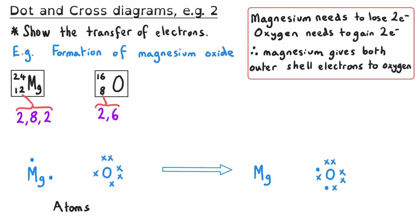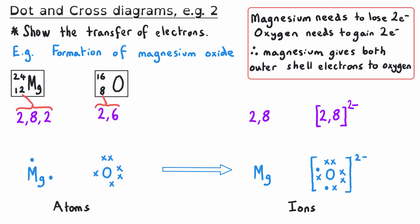After the transfer, magnesium's outer shell is emptied and oxygen has become the oxide ion, completely filled with those six crosses and two dots. Because oxygen gained two electrons it now has a charge of 2−, and magnesium lost two negative electrons so its charge is now 2+. These charges are shown with square brackets around the dot and cross diagram and the electronic structure, with the charges in the top right outside those brackets.